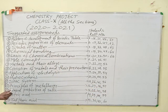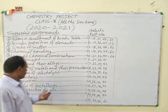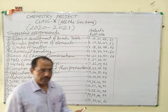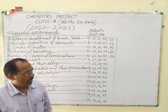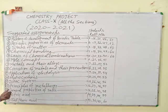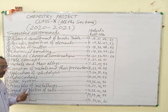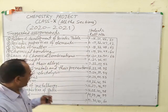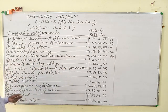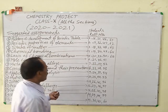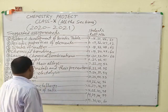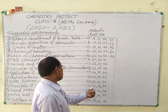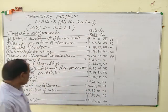Next, principles of metallurgy. In this section, describe different techniques used in metallurgical operations — that is, mining of ore, their concentration, reduction and purification. These are different principles of metallurgy for roll numbers 12, 27, 42 and 57.